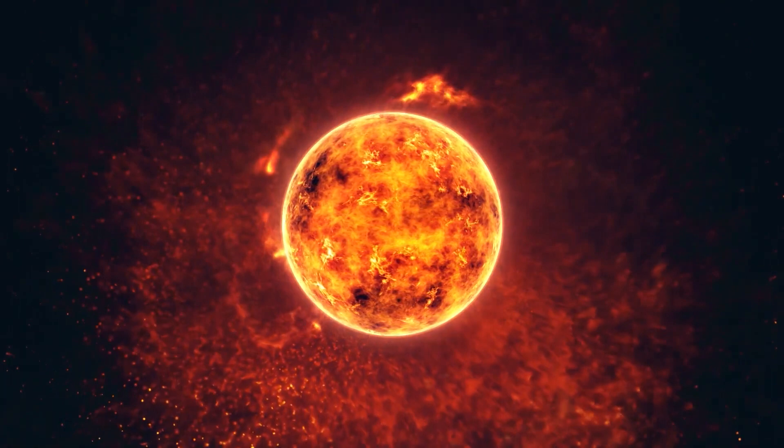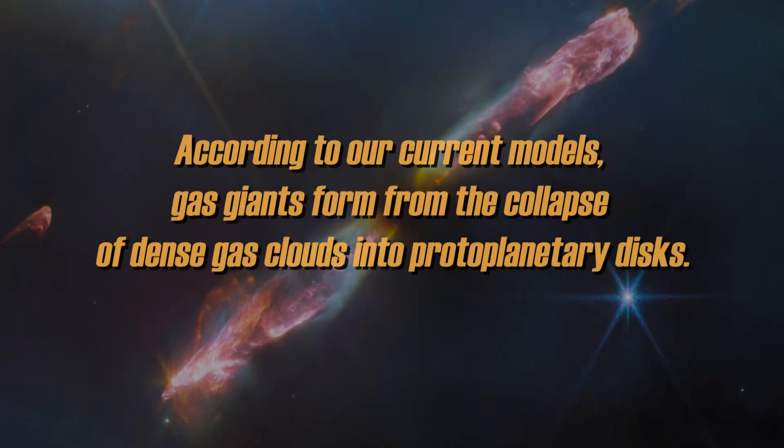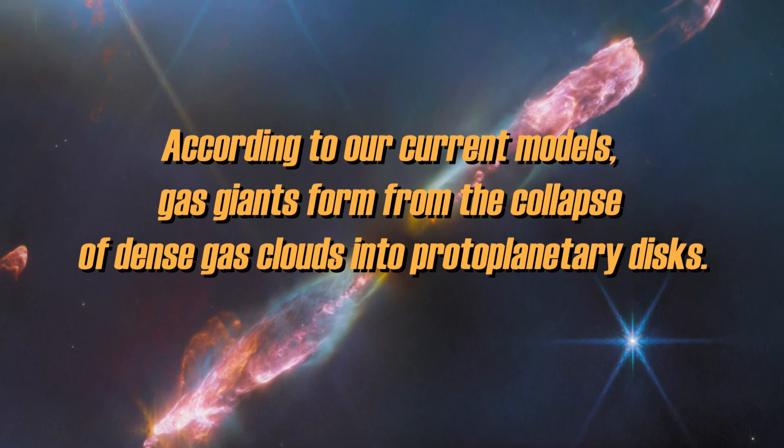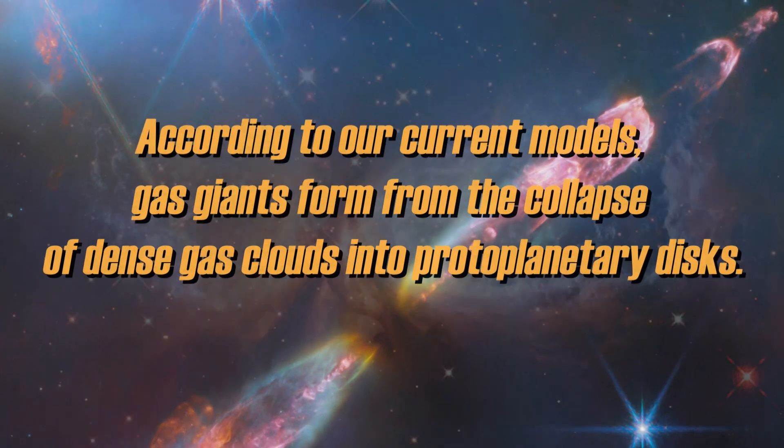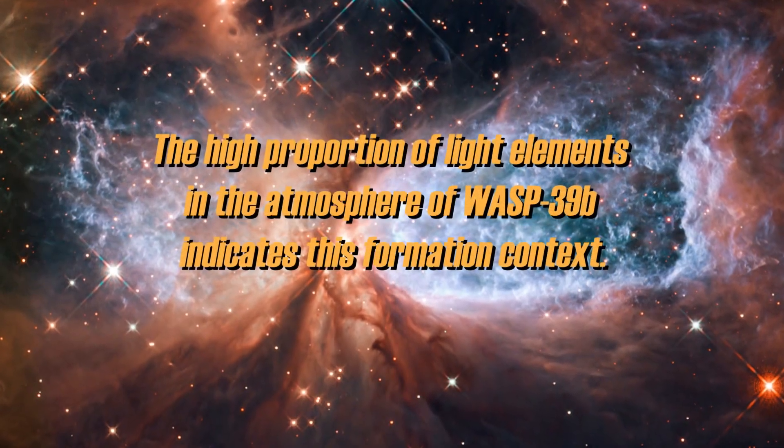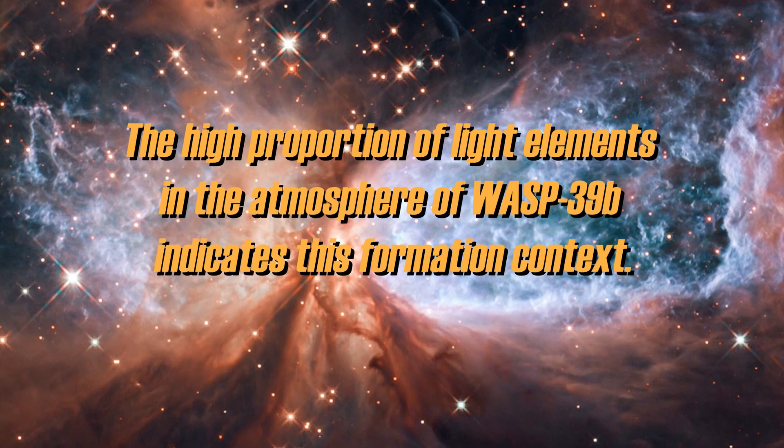In addition, its low volatile element content is also relevant. According to our current models, gas giants form from the collapse of dense gas clouds into protoplanetary disks. The high proportion of light elements in the atmosphere of WASP-39b indicates this formation context.